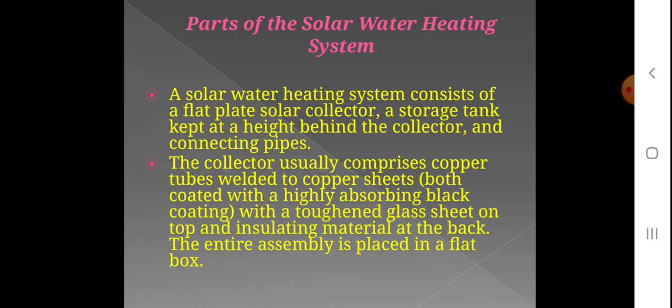In a flat plate collector you can use copper tubes and copper sheets. You can use black paint coating on the copper surfaces. Copper is a good conductor of heat, and the black color absorbs heat energy effectively.